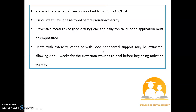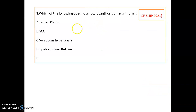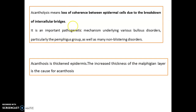Which of the following does not show acanthosis or acantholysis? Remember, in epidermolysis bullosa, acanthosis or acantholysis does not occur. Acantholysis means loss of coherence between epidermal cells due to breakdown of intercellular bridges — an important mechanism seen in various blistering disorders, particularly the pemphigus group, and also in many non-blistering disorders. Acanthosis refers to thickened epidermis; an increased thickness of the malpighian layer is the cause.